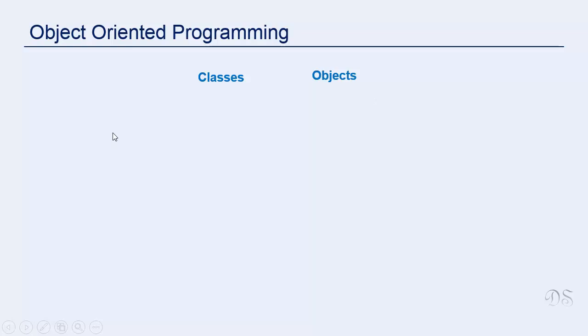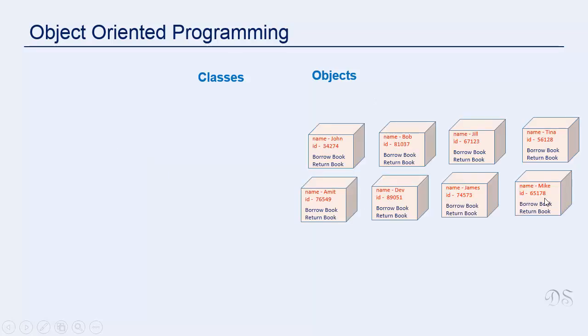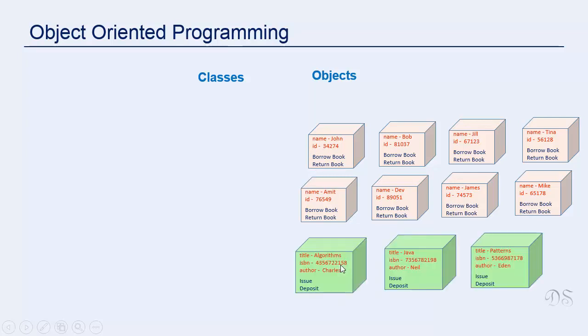Suppose you are making a library management system. You might want to model different users as objects. Each user will have a name and ID and each user can borrow a book or return a book. You will also need to represent different books as objects. So suppose each book object contains title of the book, ISBN number, author name and a book can be issued or deposited.